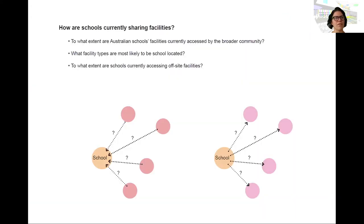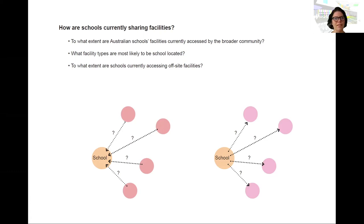The first step is really trying to understand what's happening now. How are schools currently sharing facilities? What we need to find out is what facility is being shared and how is it working, so that new developments can have data and backing for the shared facilities they're designing and building. Also, how are schools accessing off-site facilities? We know it's happening, but there's no data collected on the extent to which this is happening. I'd love to collect broad data from across Australia on how this sharing is happening and to what extent.